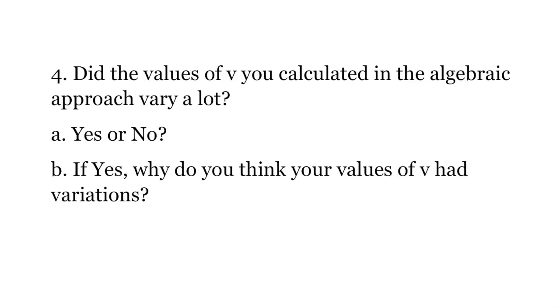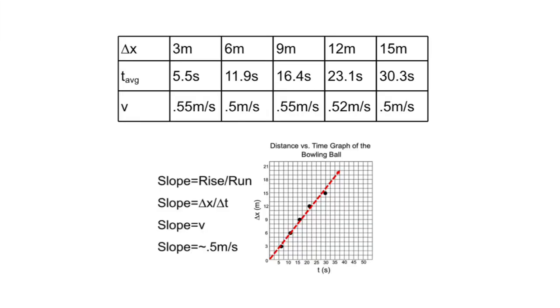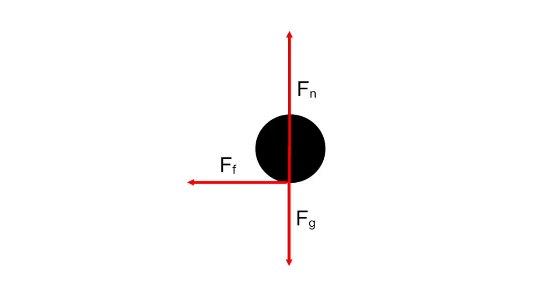Analysis question 4: Did the values of V you calculated in the algebraic approach vary a lot? A. Yes or no? B. If yes, why do you think the values of V had variations? The approximate values of V from both the algebraic and graphical analysis are approximately constant. However, they do vary. This variation is due to the slight friction force of the surface on the ball. A slight variation could also have occurred by human error when timing the movement of the bowling ball.